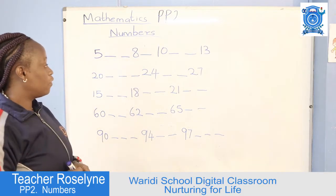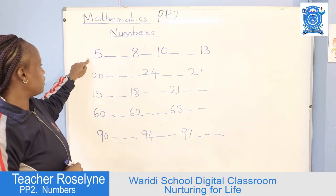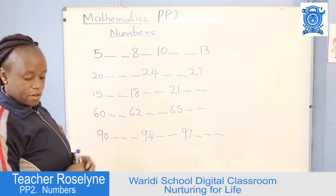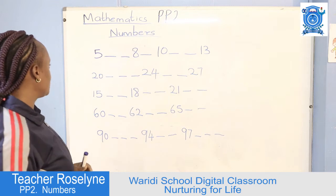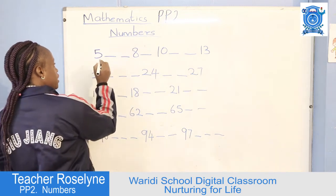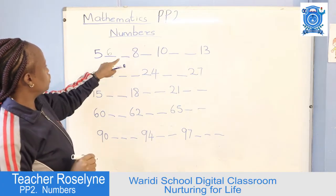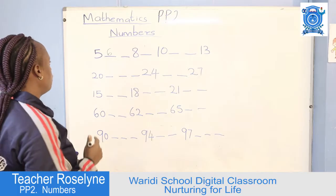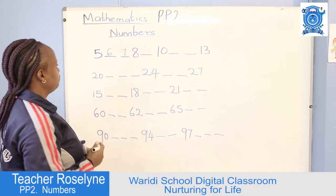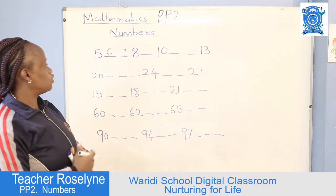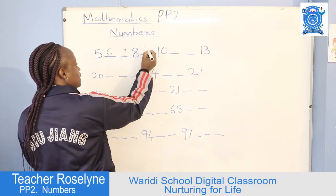I'm hoping all of you remember all these numbers. Here we are having number 5. From number 5 we go to which number? 6. Good — we go to number 6, so here you are going to write number 6. Then from number 6 we go to which number? 7. Yes, we are going to number 7. From number 7 we have here 8. From 8 we go to which number? 9. Yes, we are going to number 9.